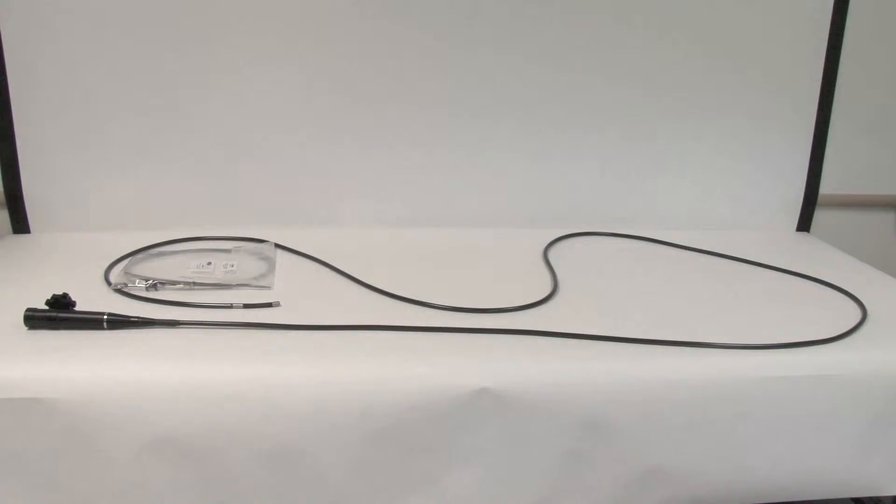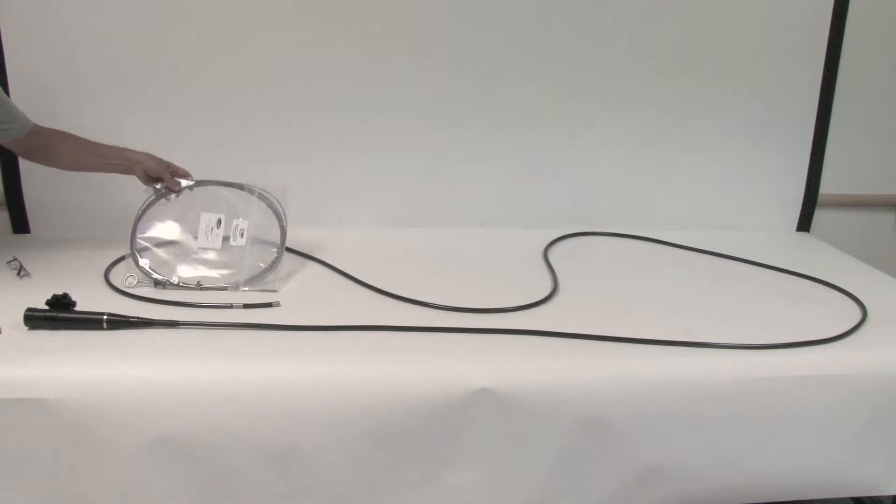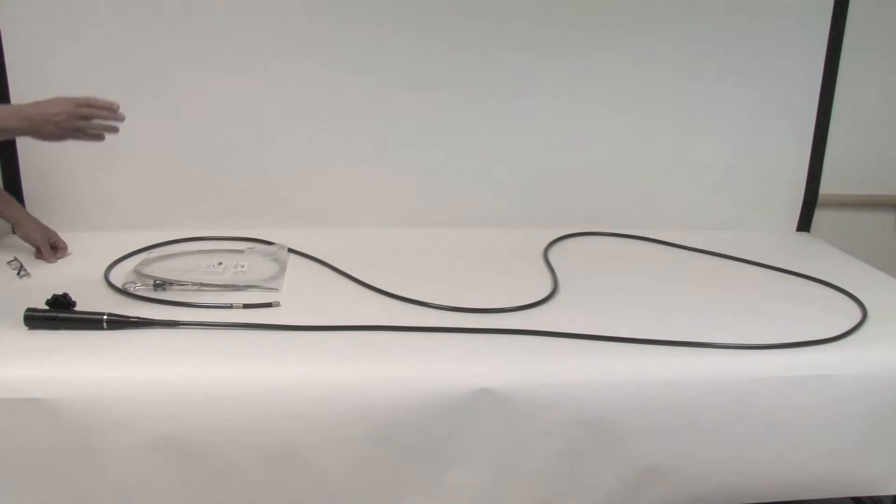Shown here is an 18-foot articulated guide tube. These are typically used for steering retrieval tools, which will be demonstrated momentarily. As you see here, it's laid out in a lazy S pattern. For purposes of inserting, operating, or removing tools, it's better to not have it in such an S pattern.